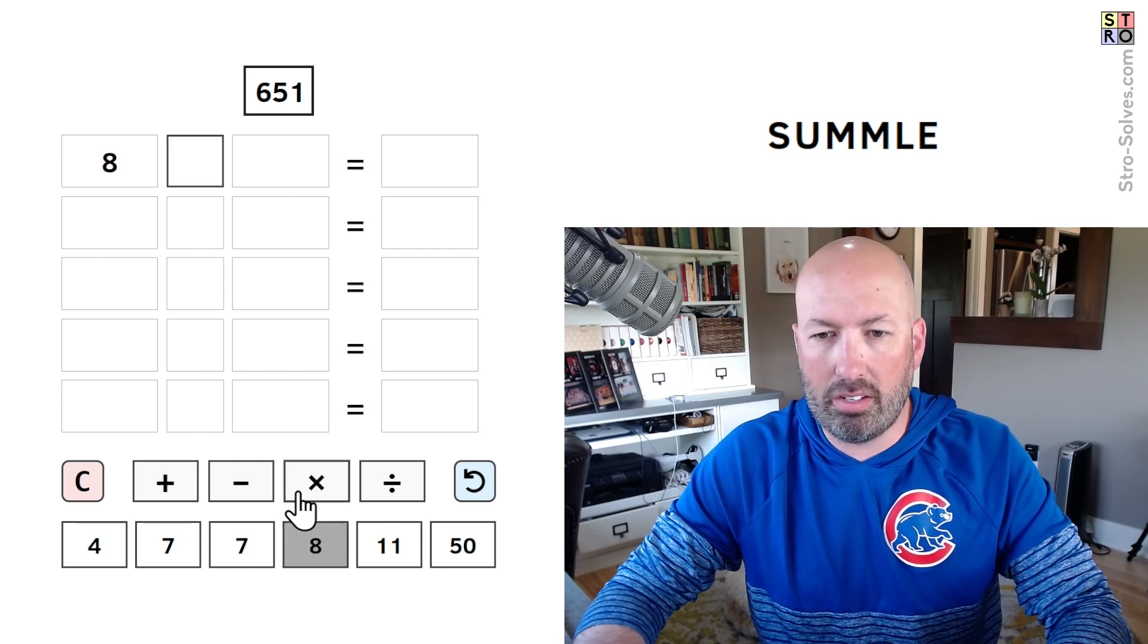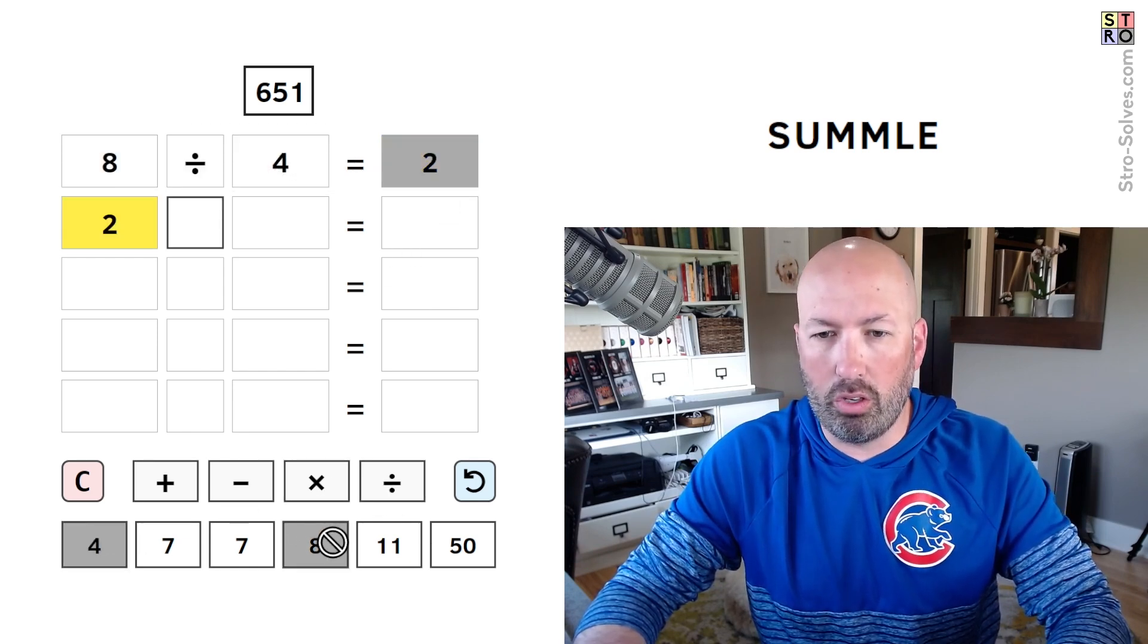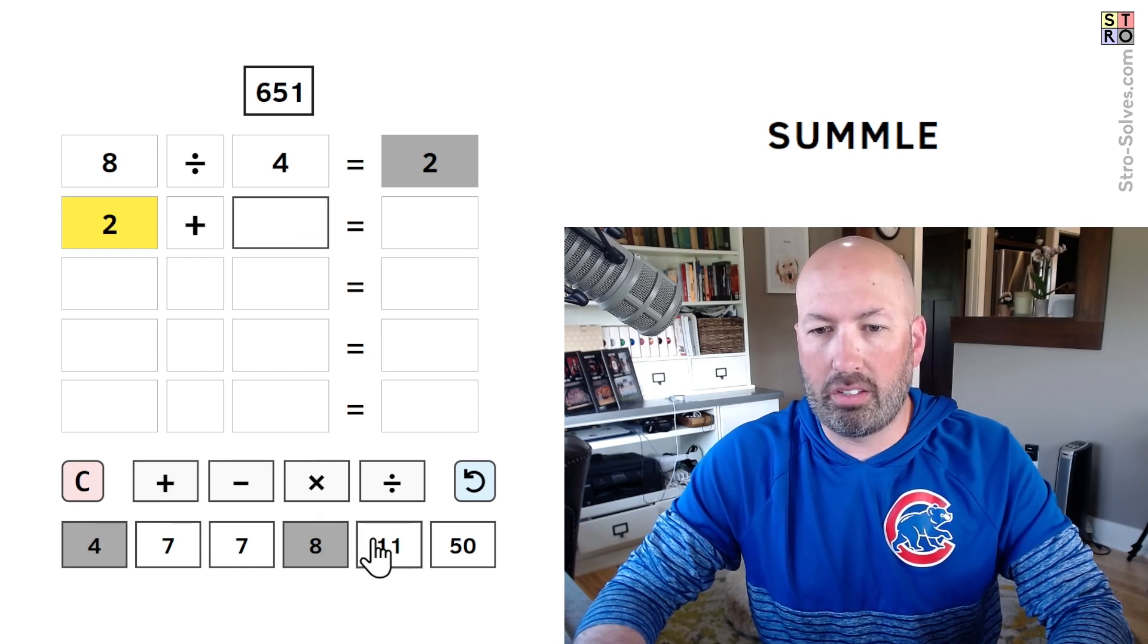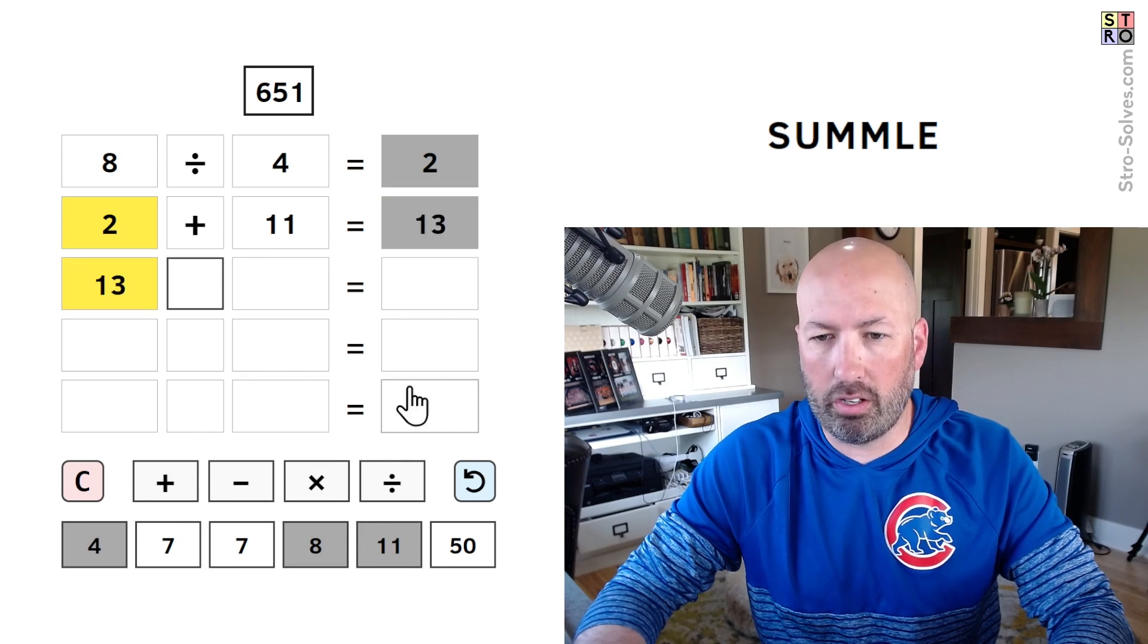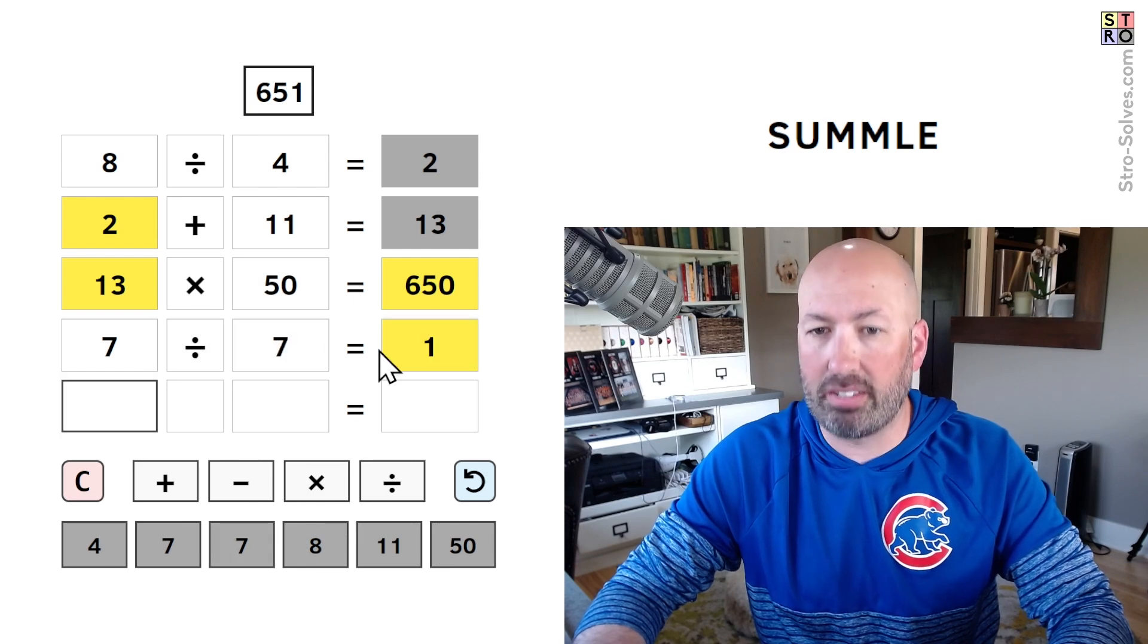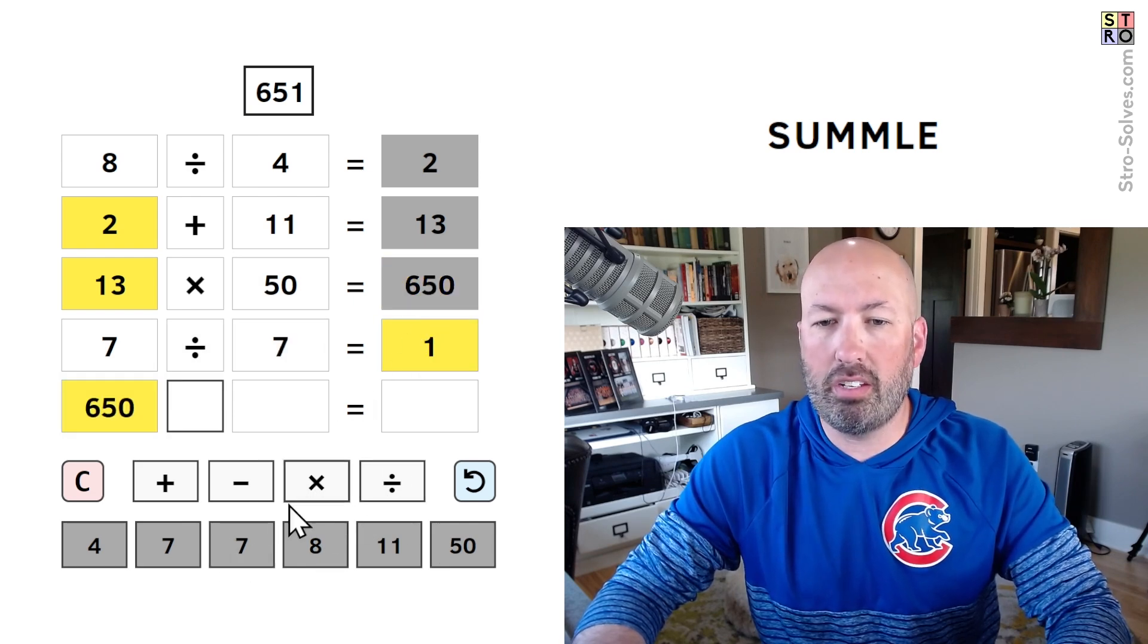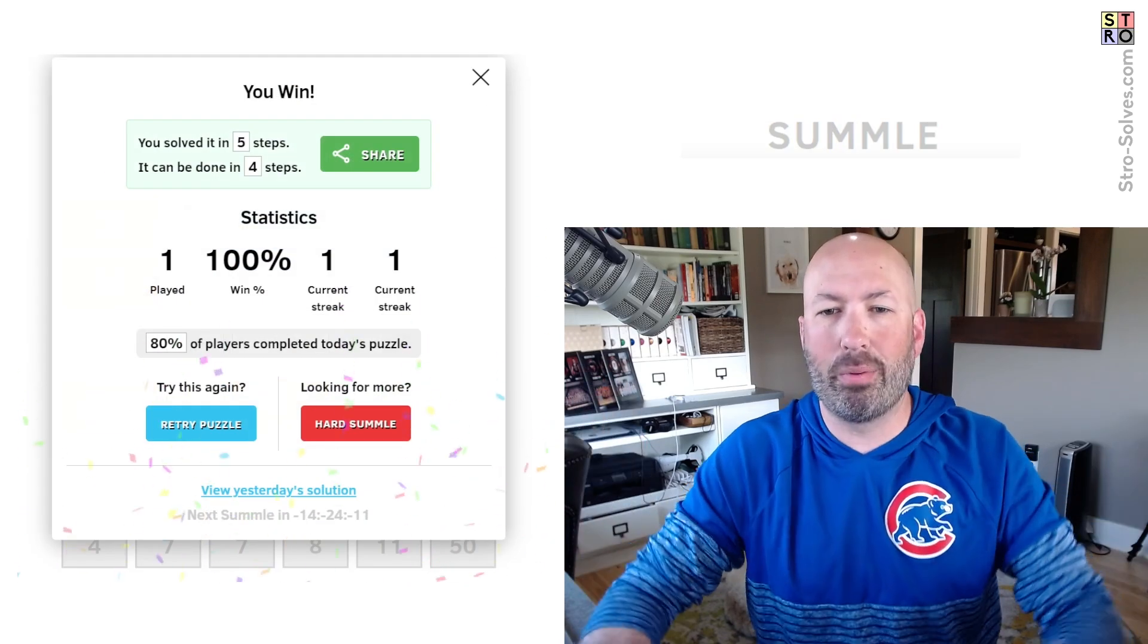So, 8 divided by 4 gives us 2. We're going to use the 2 plus the 11 to get us 13. We're going to do the 13 times the 50 gets us 650. 7 divided by 7 gets us 1, and 650 plus 1 gets us 651. There we go.